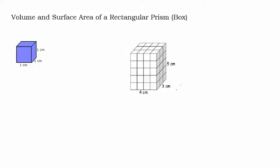I have an example over here of a rectangular prism, and we're going to start with volume. When we think about volume, we need to think about how we measure volume, and I think this is one of the biggest misunderstandings for students. Here's an example of how we measure volume: we have a centimeter by a centimeter by a centimeter — a perfect cube, like a dice — and each side measures a centimeter.